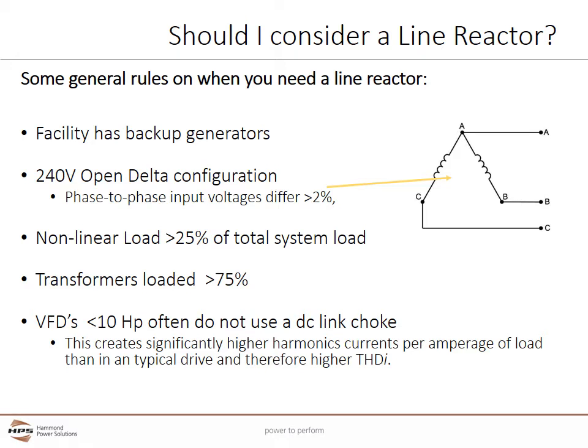Here are general rules on when you need a line reactor. If the facility has backup generators, they must be sized to supply both motor load and additional current harmonics. By reducing current harmonics, line reactors may allow sizing of a smaller, less expensive generator. 240-volt open delta circuits are often associated with phase-to-phase voltage differences which can cause current imbalances in the VFD's rectifier circuits, potentially causing the VFD's lifetime to lessen or fail outright. If installing a VFD in a 240-volt open delta configuration, a line reactor in front of it is recommended.